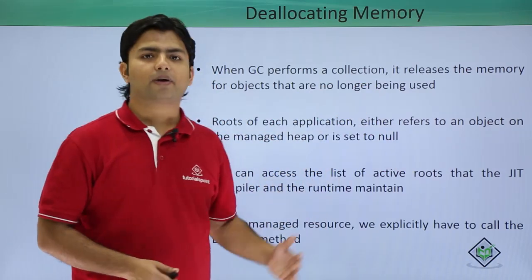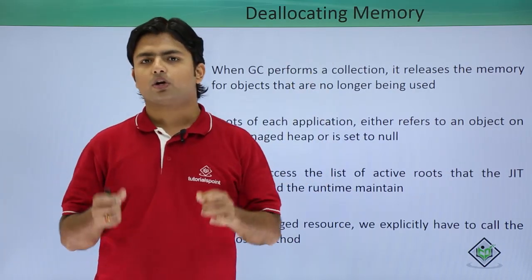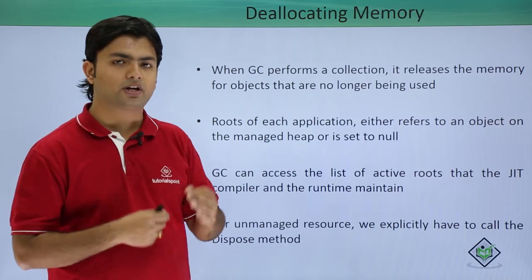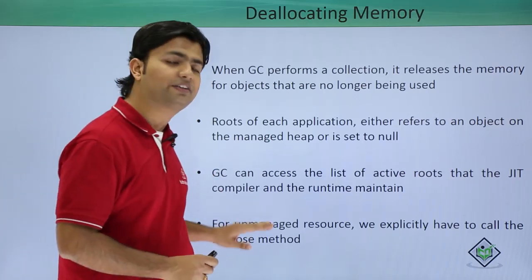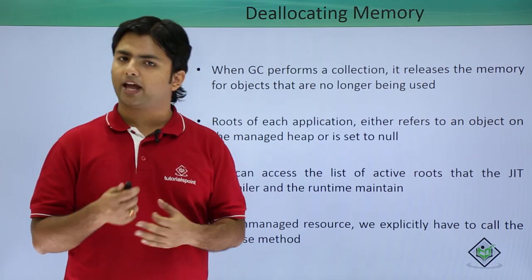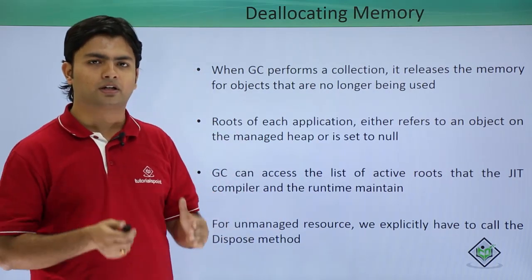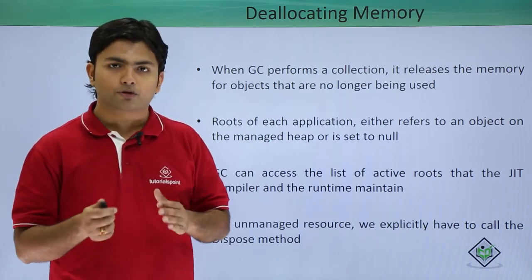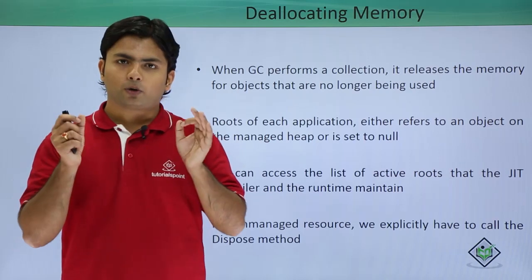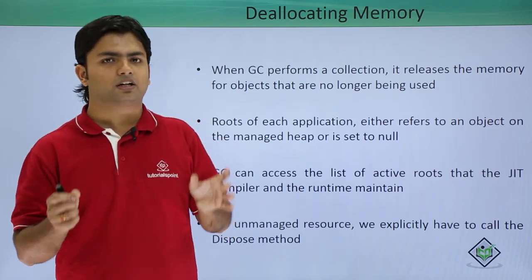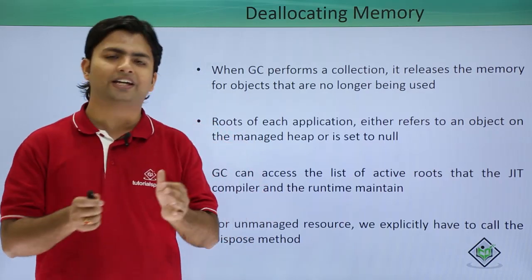For unmanaged code, all of this is about managed code. For unmanaged code, you have to remove the memory explicitly, and for that we have something called a dispose method which every such object has. You need to call that method in order to remove the data from the heap. This is how your programming can be easier because of the garbage collection concept in CLR in .NET Framework.